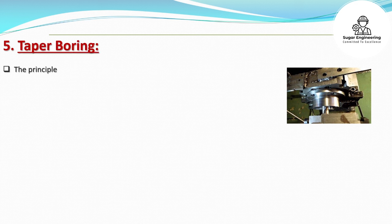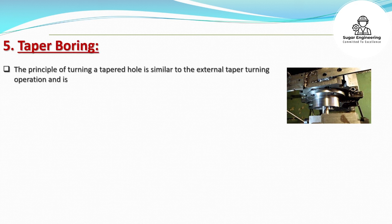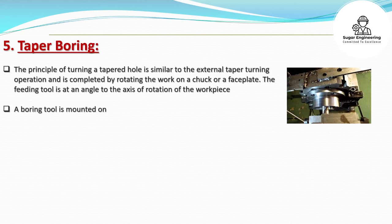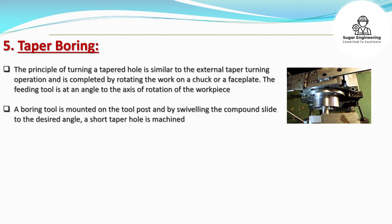Taper boring is similar in principle to external taper turning and is completed by rotating the work on a chuck or face plate. The feeding tool is set at an angle to the axis of rotation of the workpiece. A boring tool is mounted on the tool post and by swiveling the compound slide to the desired angle, a short taper hole is machined by hand feeding.